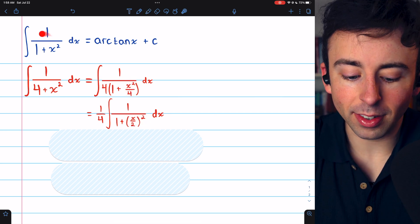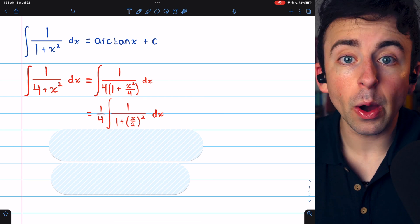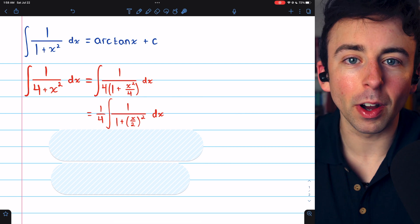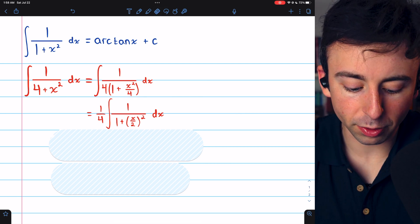Now, our integrand is not quite the same as this one. It's not 1 over 1 plus x squared. However, the function of x we have is a linear function, so it's really not going to cause a problem. Let's just go full speed ahead.